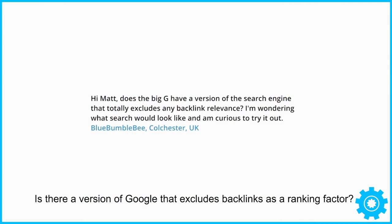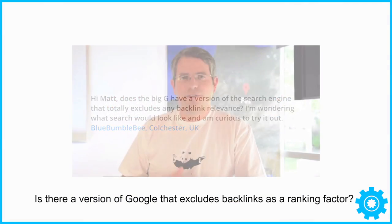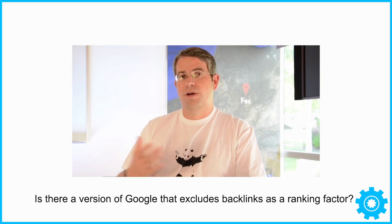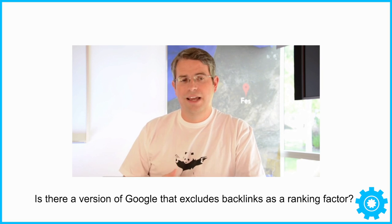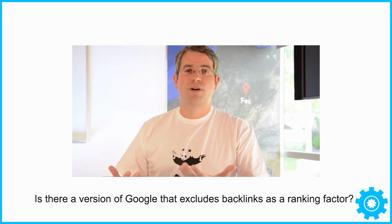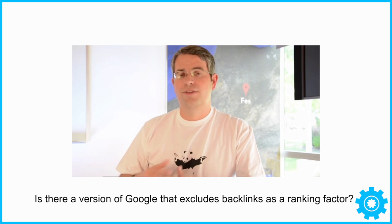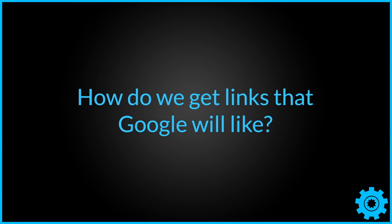Not too long ago, Matt Cutts did a video where he explained that they had tested an algorithm without links as part of it, and essentially they gave up on it. It was far worse in terms of results. So if Google still uses links and they need links for their algorithms, for their search rankings, how do we go about getting links that Google will like?